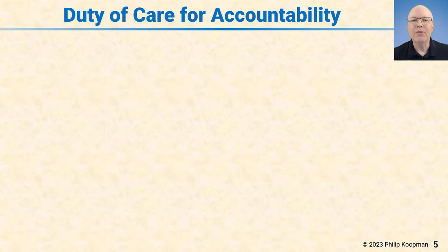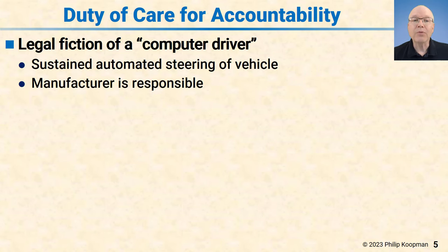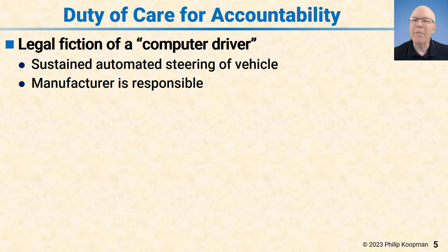The reason we want to do this is to institute more accountability than there currently is. If it's going to take hundreds of thousands or millions of dollars to sue a car company for a product defect, that's a barrier for people with just claims to recover, and it compromises accountability. But if computer drivers are subject to the same mechanisms for claim recovery as human drivers, that's going to improve accountability. To do this, we're going to create a legal fiction of a computer driver. A computer isn't a person — it's not even a legal person like a corporation. A computer can't hold property, can't sign contracts. It's not a person, and we don't want to make it one. So we'll have a legal fiction of a computer driver, defined as sustained automated steering of a vehicle.